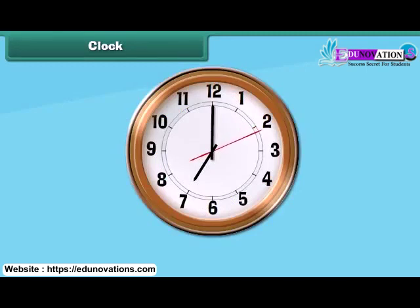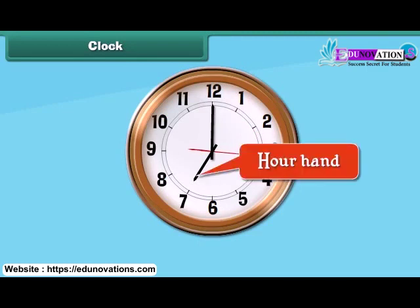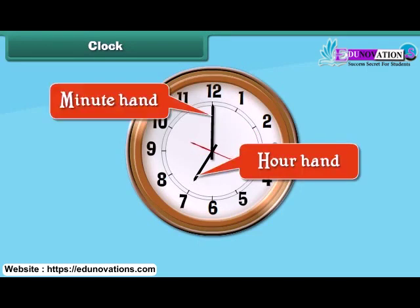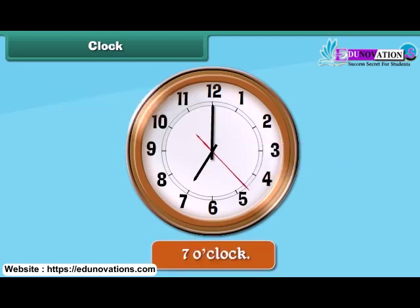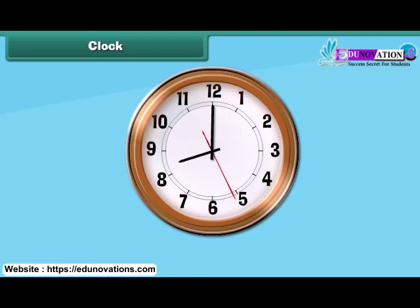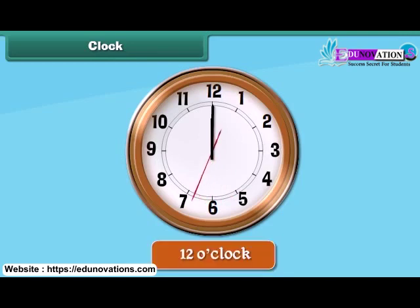Look at the hour and the minute hand in the clock. Here the hour hand is at 7 and the minute hand is at 12. Therefore, we refer the time as 7 o'clock. Again, the hour hand is at 12 and the minute hand is at 12. Therefore, we refer the time as 12 o'clock.